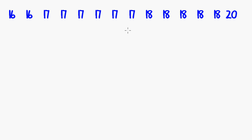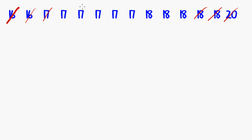To find the median, what we do is we just count our way into the middle. The way that I usually do this, which is a pretty quick freehand way of doing it, is to cross off a number at the beginning and a number at the end until we get to the middle — like this. Cross one from the start, one from the end, from the start, from the end, and so on.